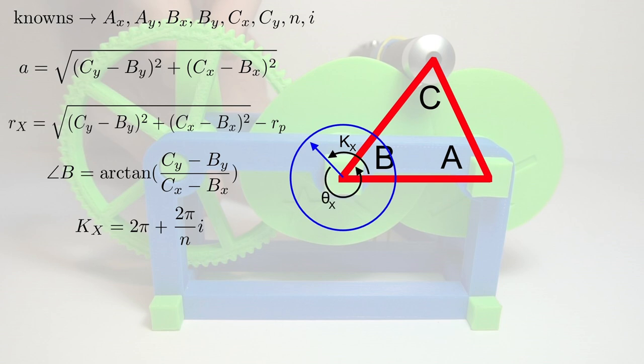Finally we can find what theta of x is, and that's 2π minus K_X plus the angle of B. I've drawn the same diagram below, rotated, so the frame of reference is at the zero rotation of the cam. As you can see, we have theta of x and r of x, which are basically polar coordinates telling us where big X is.